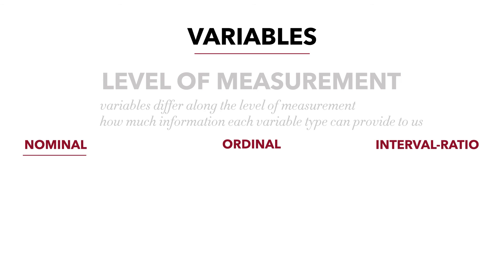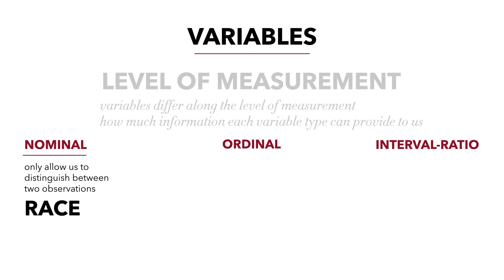Nominal variables are those that only allow us to distinguish between two observations. A variable such as race — an individual can be white, black, Asian, and so forth — we can distinguish those individuals, but that's all we can do. We can't rank them. We can't say that a black person has more race than a white person. All we can do is distinguish into nominal, or named, categories.